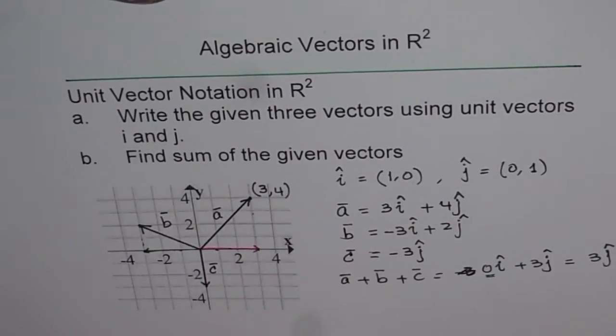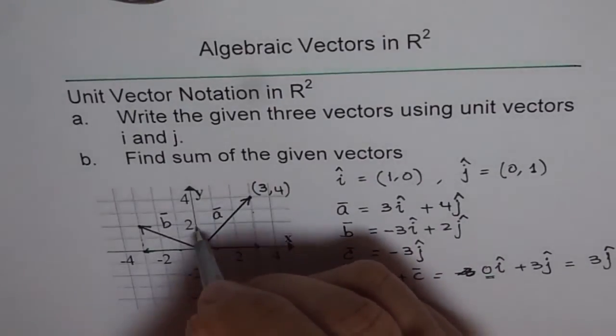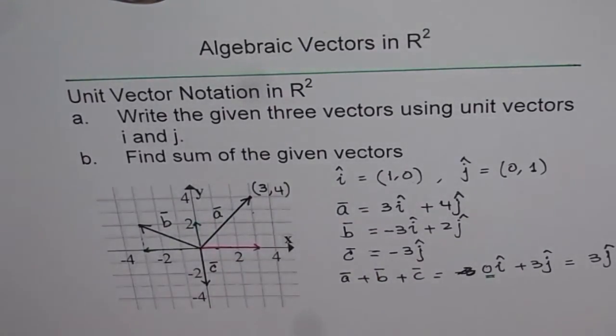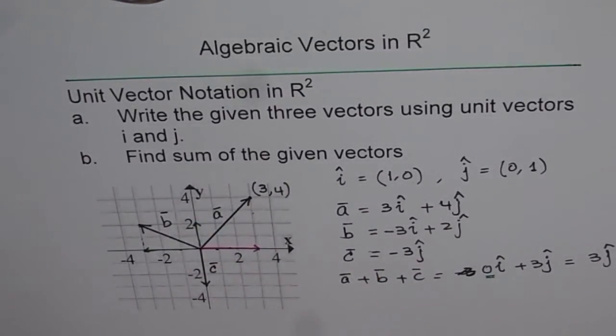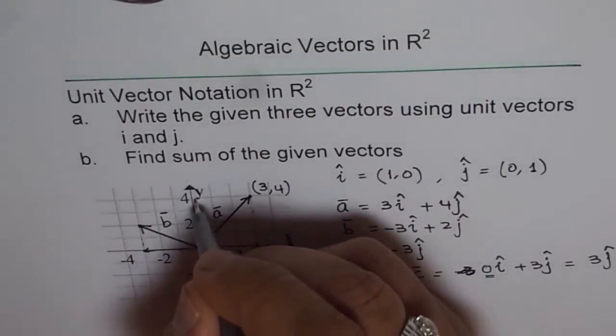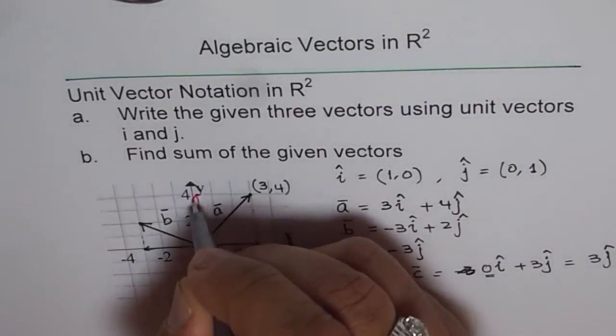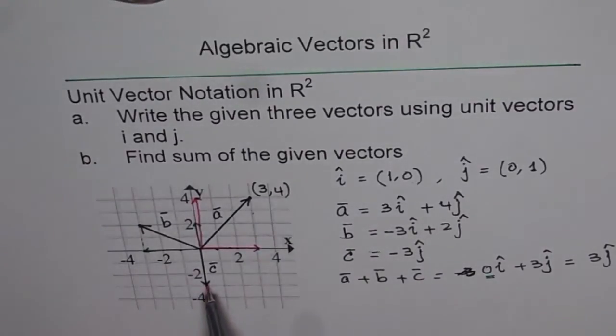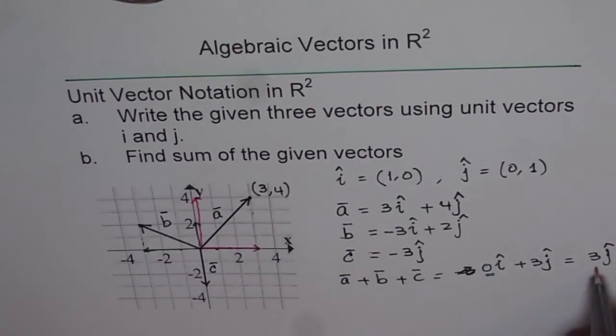As far as the y components are concerned, for B, the y component is this. And for A, the y component is 4. Now, 4 and 2 add up to 6. And for C, it is minus 3. So you take away 3 and you get plus 3 here.